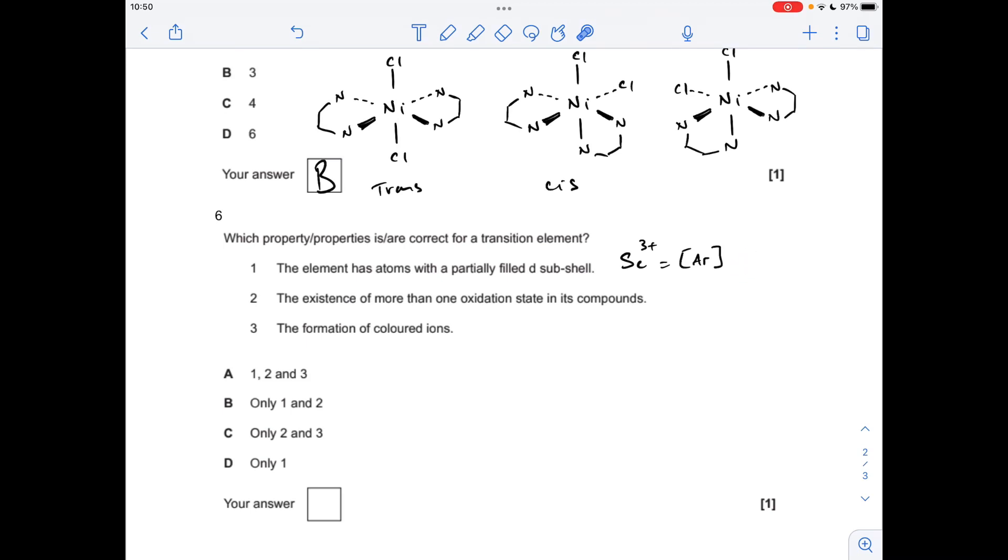Statement two: the existence of more than one oxidation state in its compounds. If we go for something like iron, iron can form 2+ and 3+, so that is correct. And finally, formation of colored ions. If we just stick with the iron 2 and iron 3, these tend to be sort of green in color, these tend to be sort of orange-yellow in color, so yes they can form colored ions. So statement three was correct as well, so the answer was C.